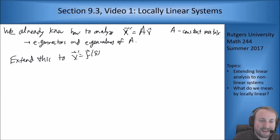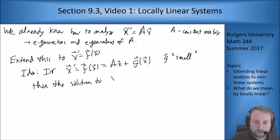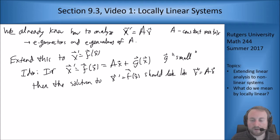The idea is that if I can write this system as something like a matrix times x plus something small, then the solution to the non-linear equation should look like the solution to the linear equation, which we know what that is already.